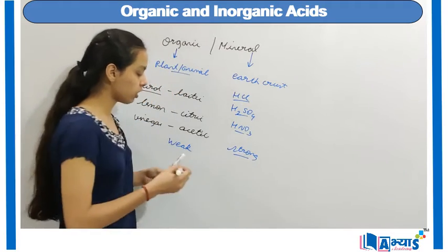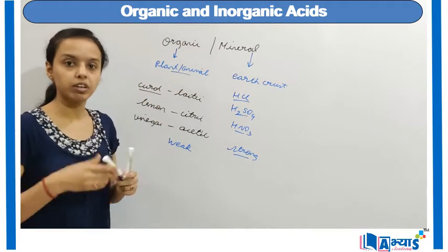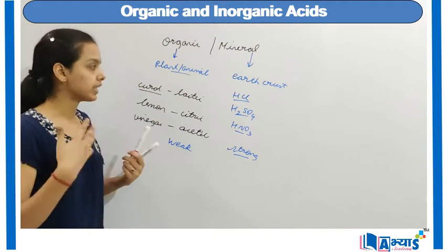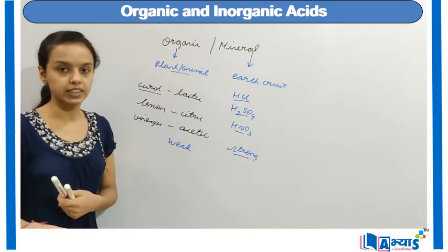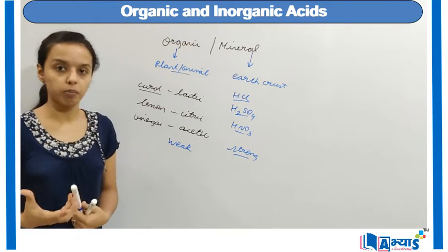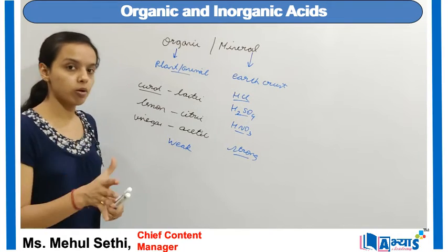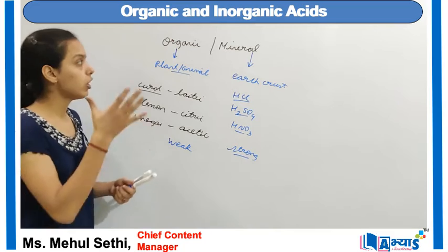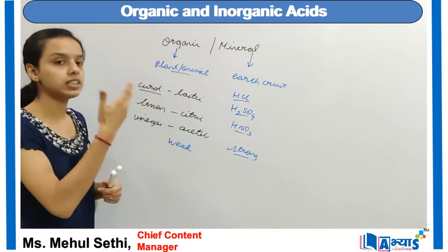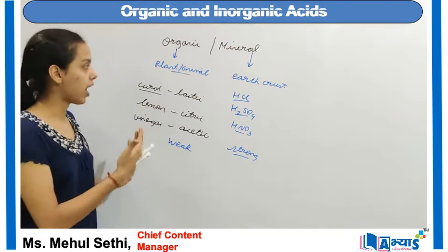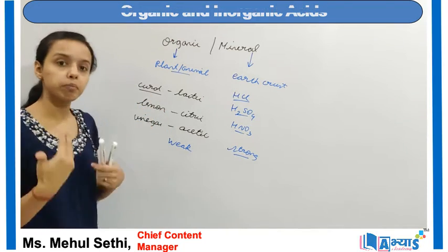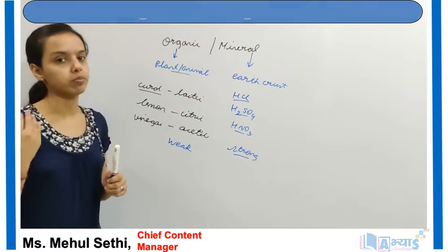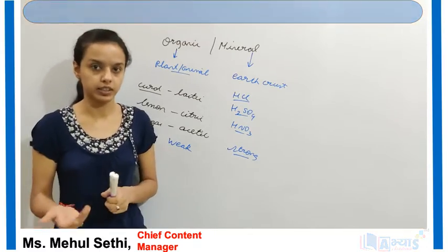This was the concept on the difference between organic and mineral acids, or the classification of acids based on their composition. By composition, we mean that organic acids are obtained from plants and animals, while mineral acids are obtained from the earth's crust.